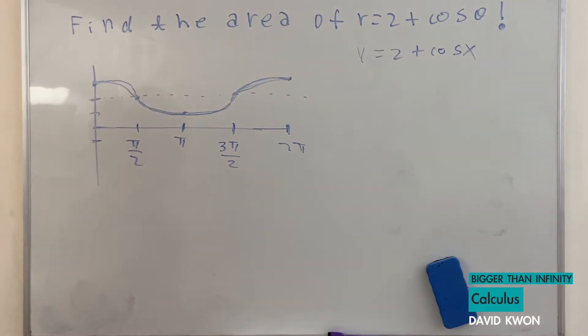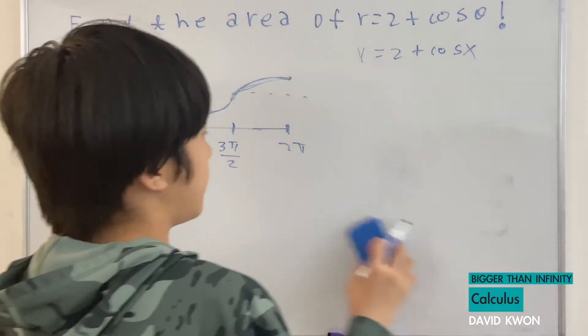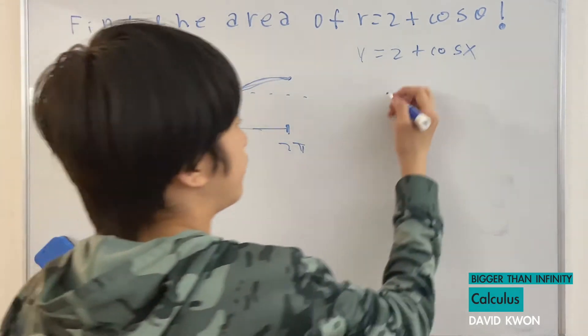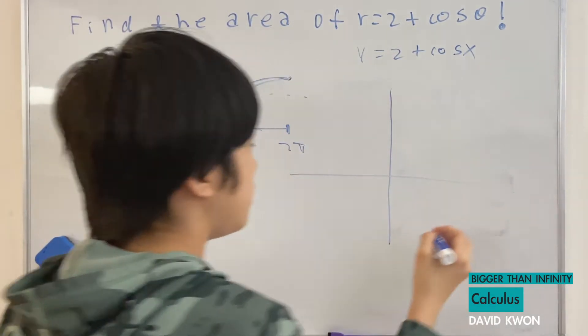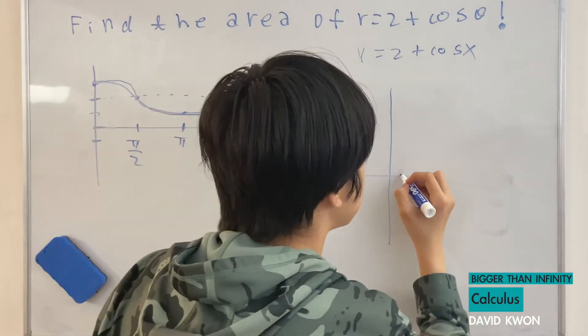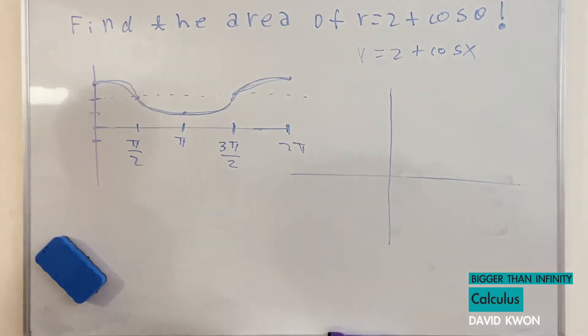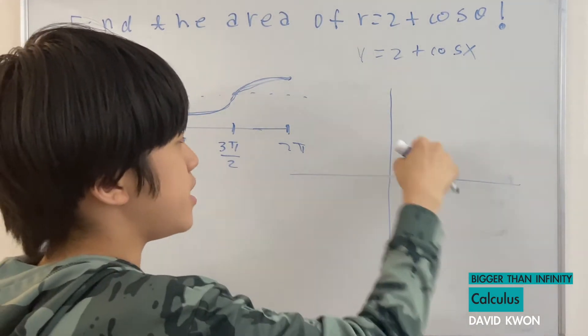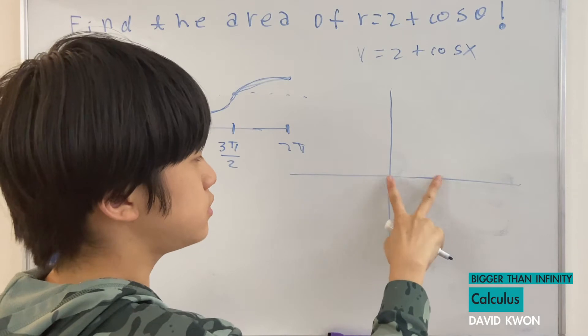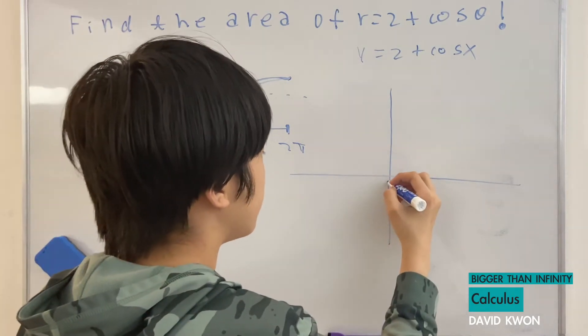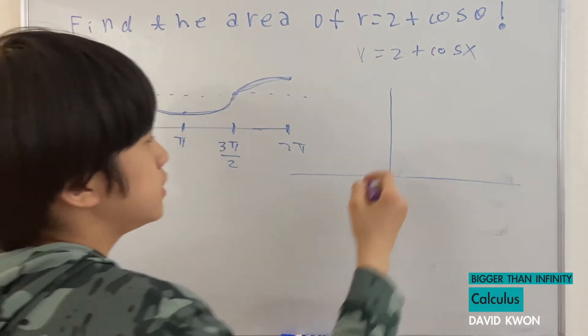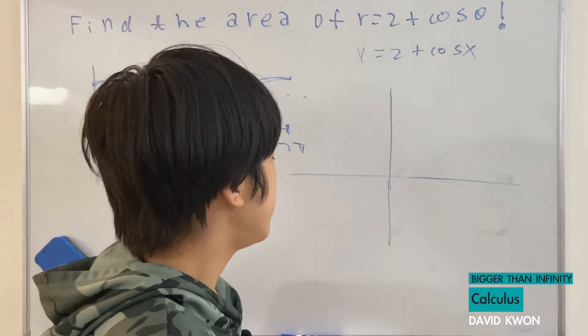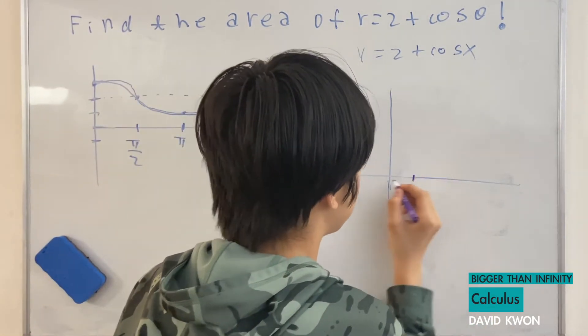When x equals 0, we have here and here. I will not say anything because we have a graph of this, and we connect the dots. Actually, let's start off with a smaller circle first.